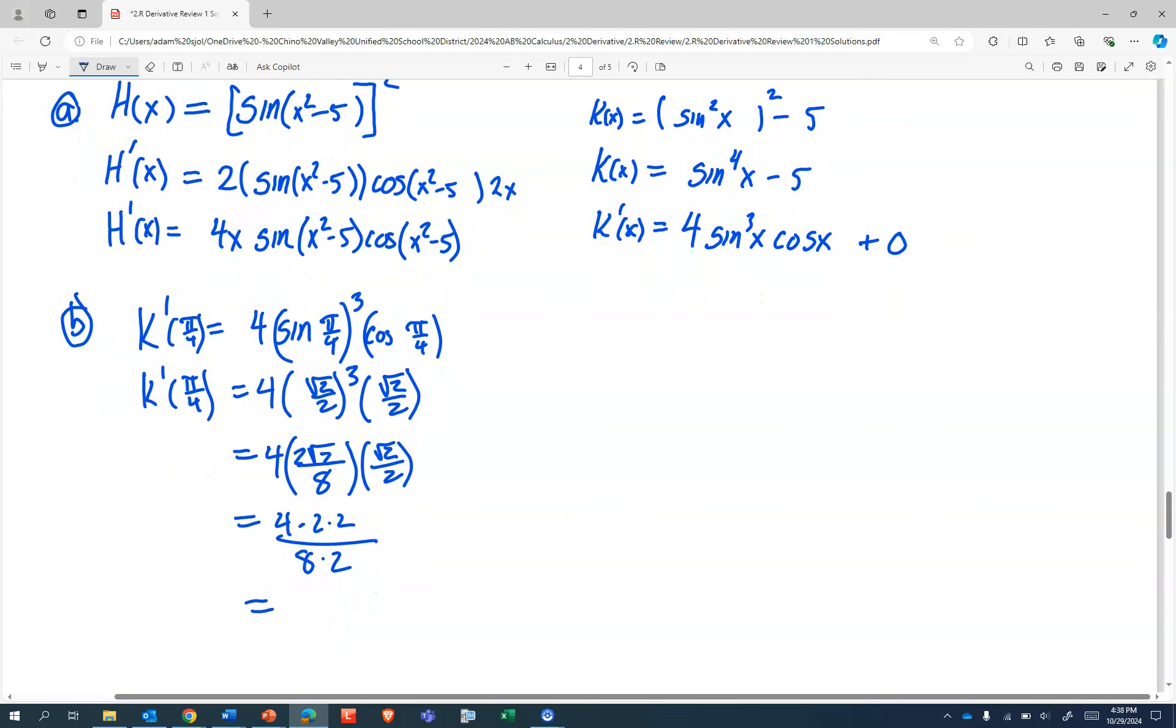Is that just 1? What a waste of time. 4 times 2 is 8, 8 divided, oh yeah, I think that's 1. So we'll just put k'(π/4) as 1. I hope that's right.